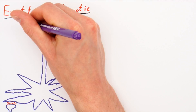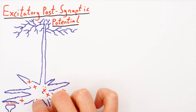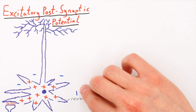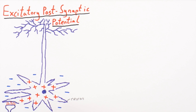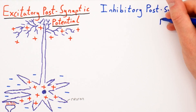An excitatory post-synaptic potential is where neurotransmitter binding causes positively charged particles, called ions, to flow into the neuron, making the inside of the neuron more positive. This makes the extracellular space outside the neuron relatively more negative. Because this area is now more negative, the distant extracellular space at the other end of the neuron becomes relatively more positive. This means we have two different charges separated by a distance — we have a dipole. It's also possible to have a dipole the other way round, from an inhibitory post-synaptic potential.